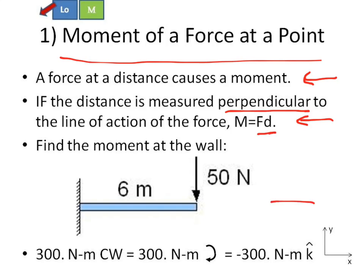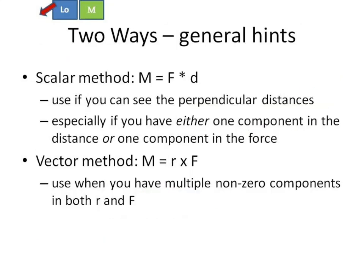In a problem like this, this one's pretty easy. That means your perpendicular distance is 6, your force magnitude is 50, and you've got a nice 300 N-m clockwise moment at this point. And we talked about different ways that you could write that down. Whatever it is, the point is you've got to deal with the moment of a force at a point.